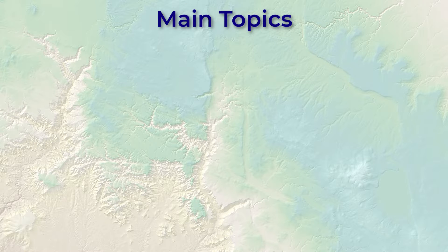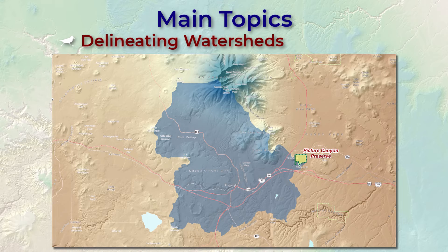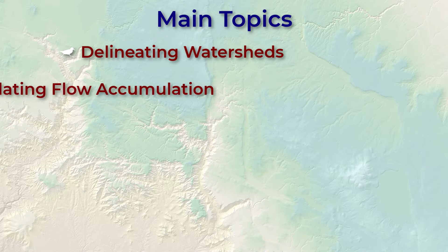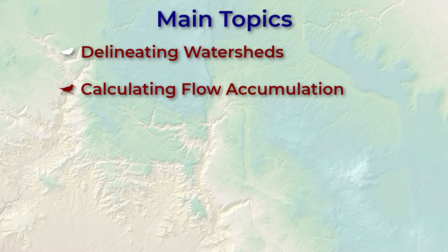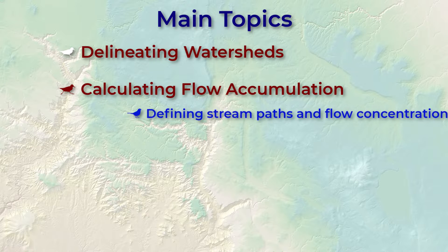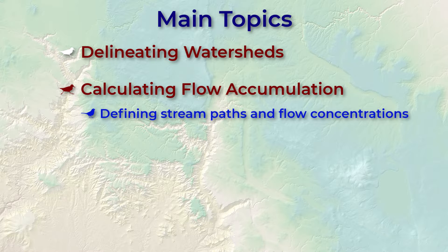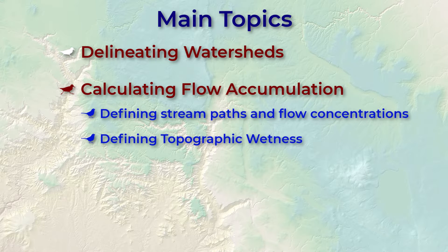Surface stuff can be pretty cool and powerful though. For example, we're going to generate the watershed that drains into Picture Canyon. We're also going to do some stuff with flow accumulation, which basically tells us the catchment size for every cell on the landscape. This flow accumulation raster is then useful for finding stream paths and also for finding areas where flow concentrates, which might therefore be susceptible to flash flooding. It's also used for generating a general index of topographic wetness referred to as TWI, which can then be useful for habitat analysis and as a popular index for ecosystem researchers and land managers.